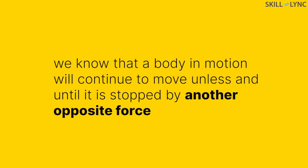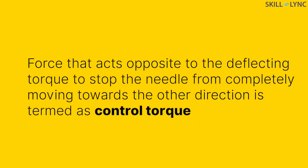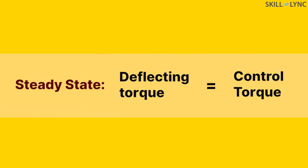But how do you think the needle stops moving? We know that a body in motion will continue to move unless and until it is stopped by another opposite force. The other force that acts opposite to the deflecting torque to stop the needle from completely moving towards the other direction is termed as the control torque. A steady state is achieved when the deflecting torque is balanced by the control torque.